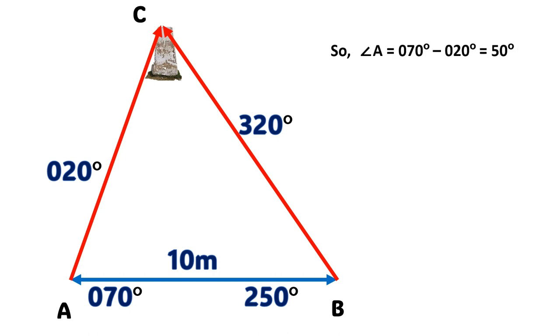So angle A is going to be 50 degrees. Angle B is going to be 70 degrees. And as we already know that all the inner angles of a triangle is 180 degrees, so angle C must be 60 degrees. So far so good.